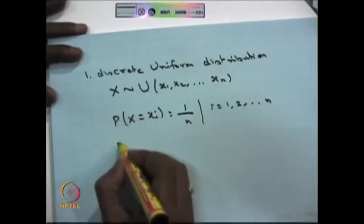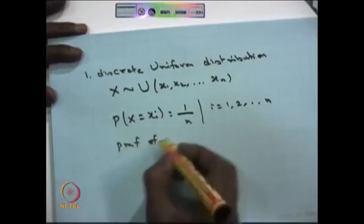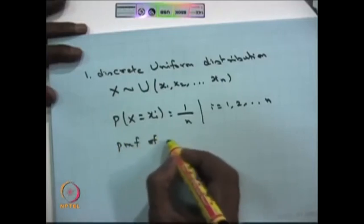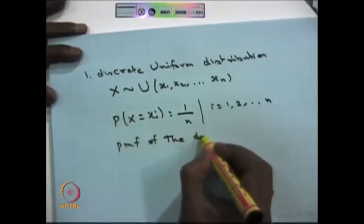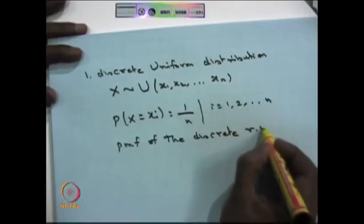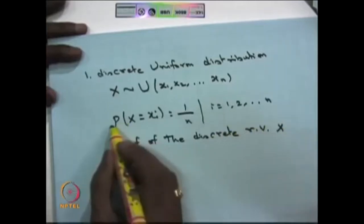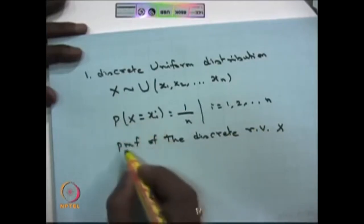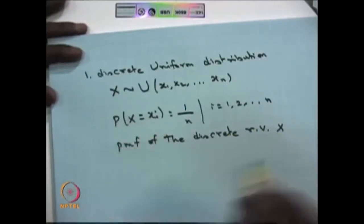Therefore, this is the probability mass function of the discrete random variable X. The probability of X equal to Xi is given by the probability mass function of the discrete random variable at Xi, which equals 1/n for each i.